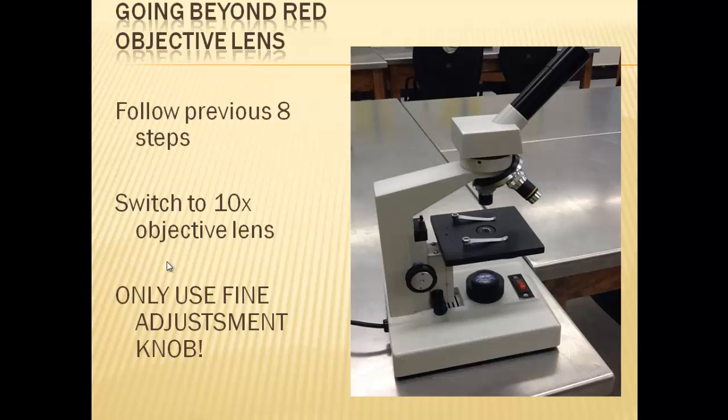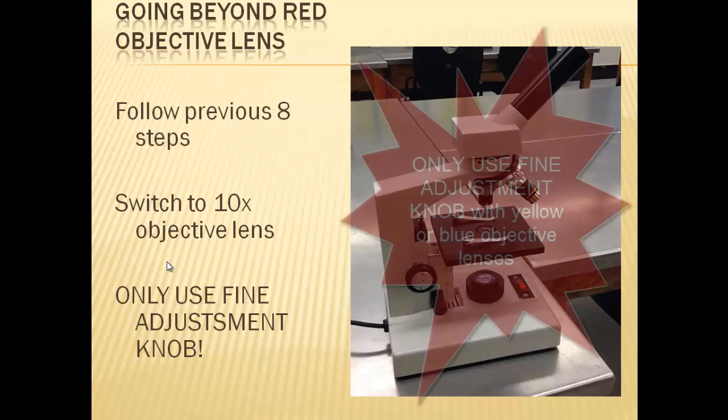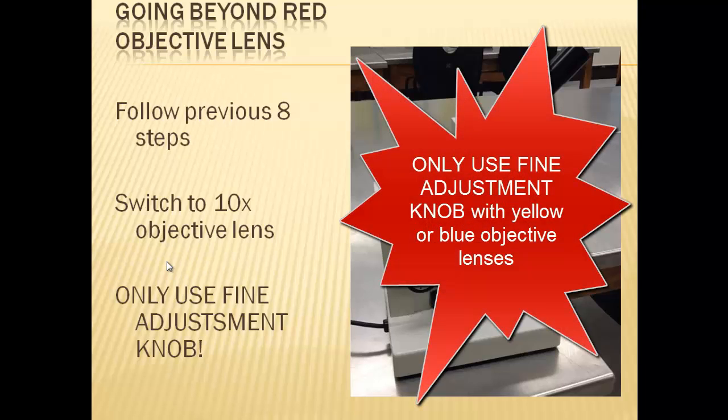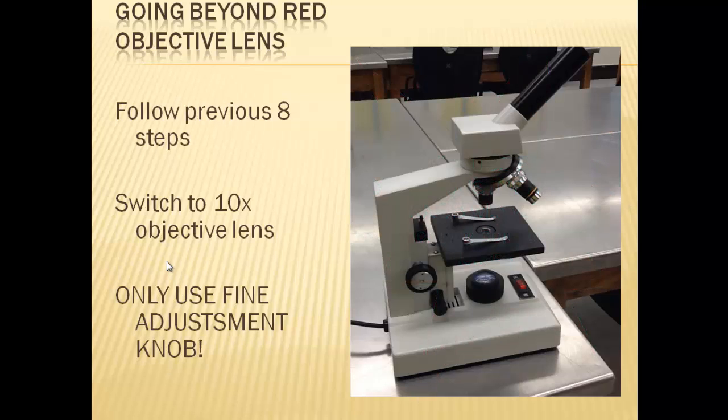Lastly, you never, ever, ever use the coarse adjustment knob when you're trying to use the yellow objective lens or the blue objective lens, the 10 power objective lens or the 40 power objective lens. You don't want to move the stage. You just want to sharpen the image. You don't actually want to move the stage at all or move the stage much.